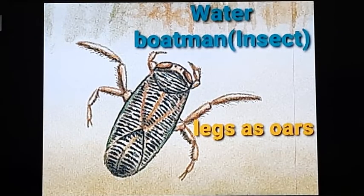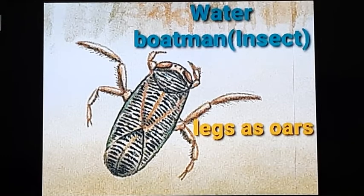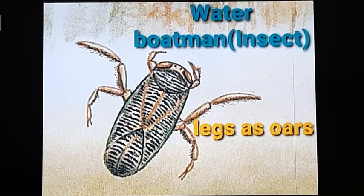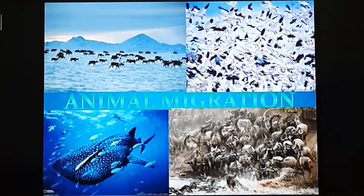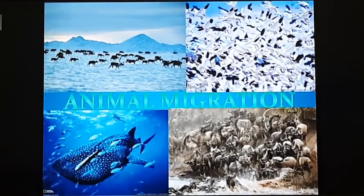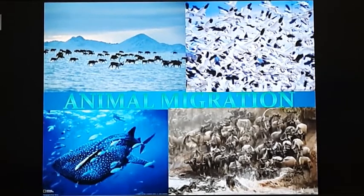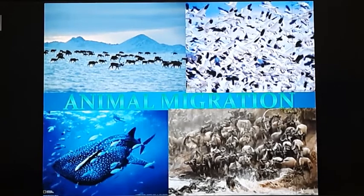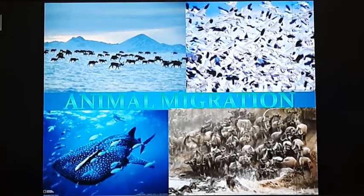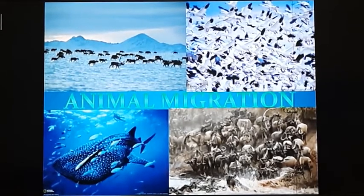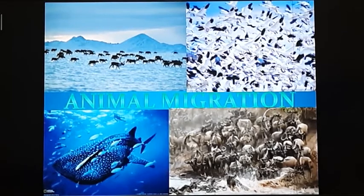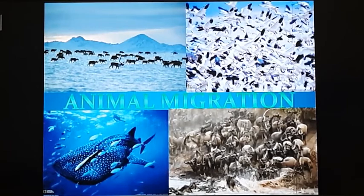The water boatman is an insect which can swim in water. While swimming, it uses its legs as oars due to which it can move very easily. There are also some insects like locusts and grasshoppers which use their hind limbs to jump. Human beings also have strong and well-developed limbs. We have two hind limbs due to which we can stand, walk, and run. Our forelimbs, called hands, are used for holding different things and activities like writing and grasping.